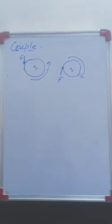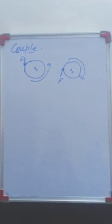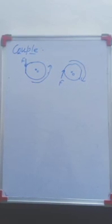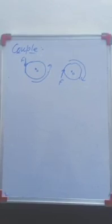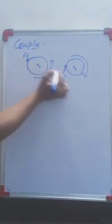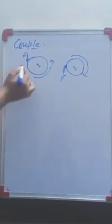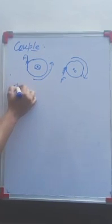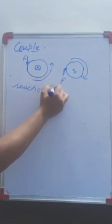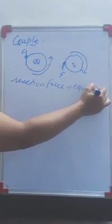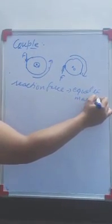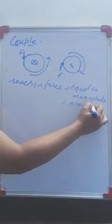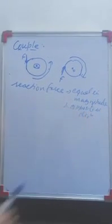The rotation is always produced by a pair of forces. In our last class we learned that for every action there is always a reaction — there must be a reaction force. So whenever a single force is being applied, at the pivoted point a reaction force is always present. This reaction force is equal in magnitude and opposite in direction.